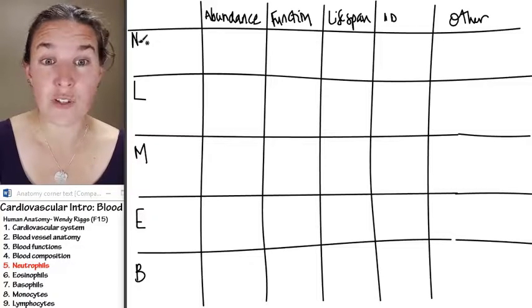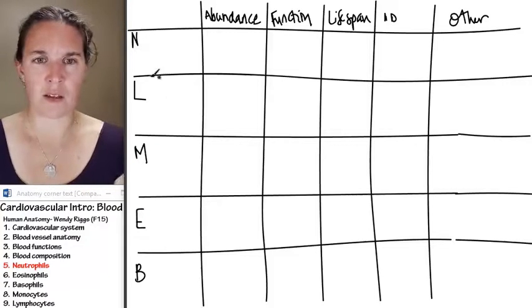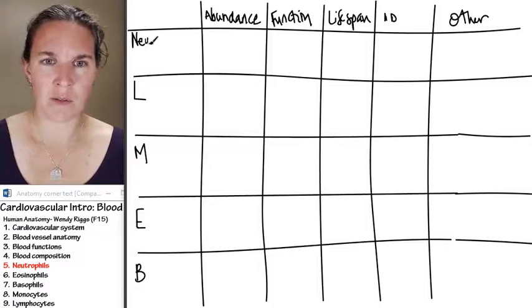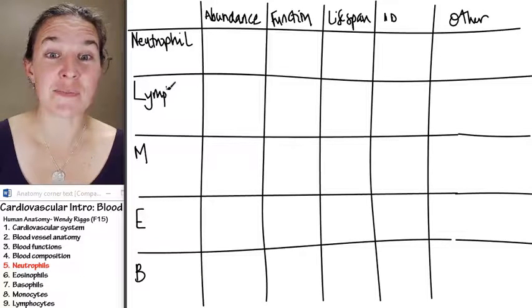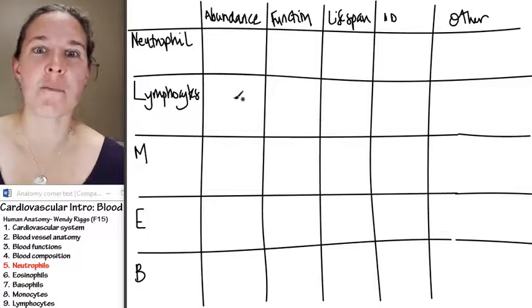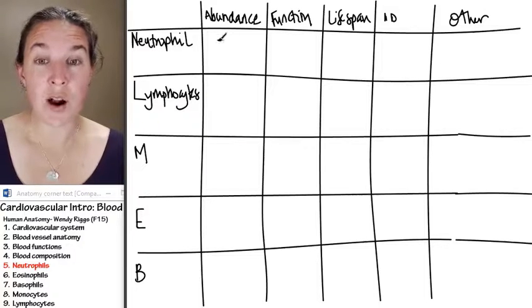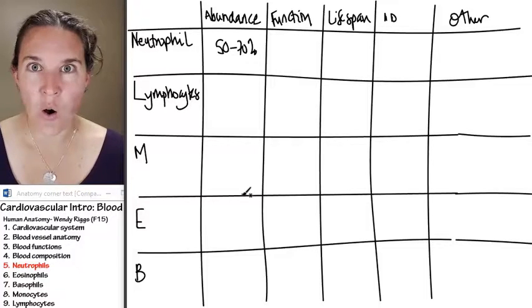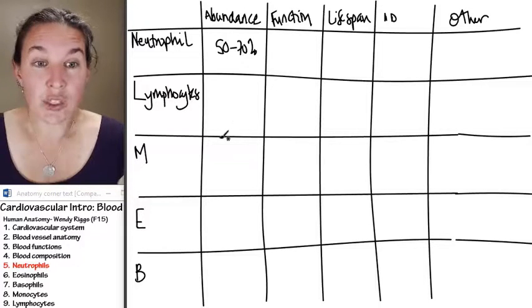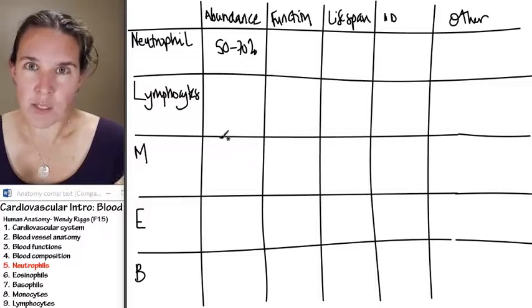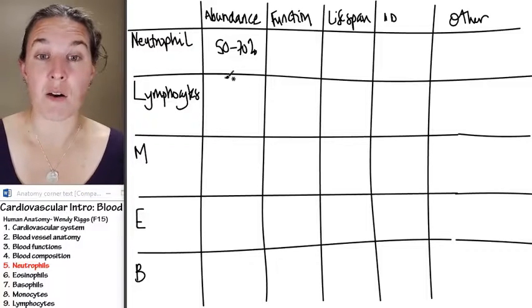We have neutrophils. They are the most common. Neutrophils are about 50% to 70% of all white blood cells. That's a lot. So when you're looking at a blood slide, most of the white blood cells that you're going to see are going to be neutrophils.